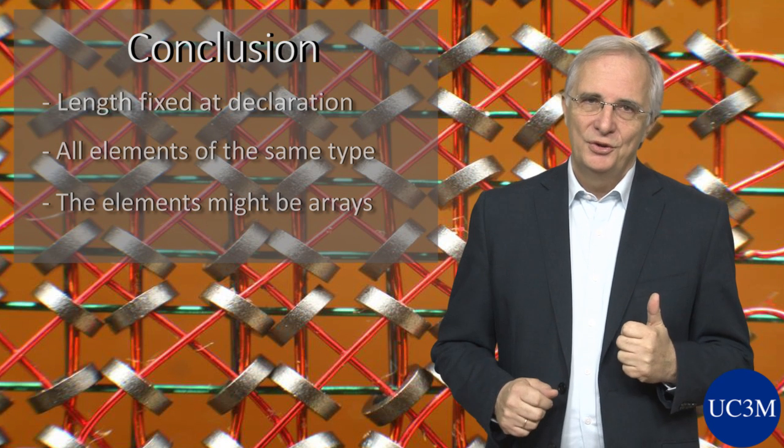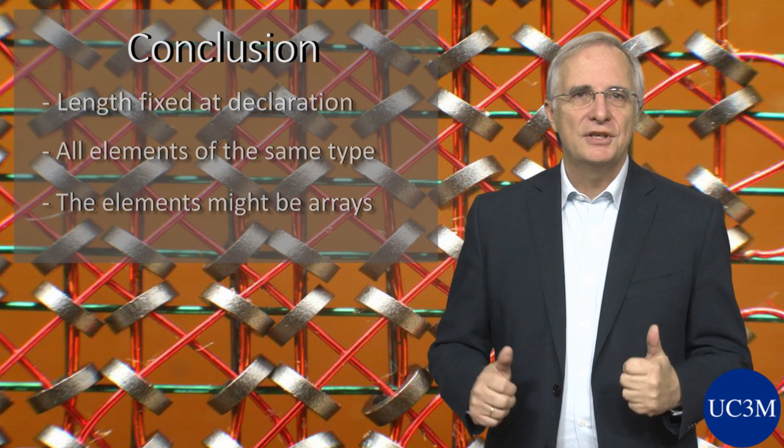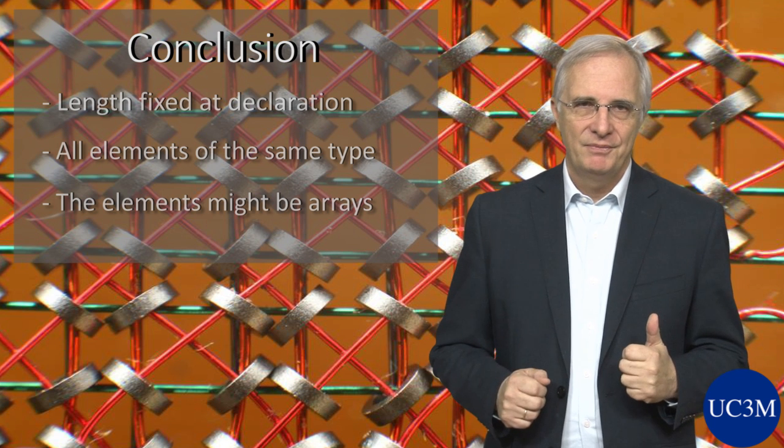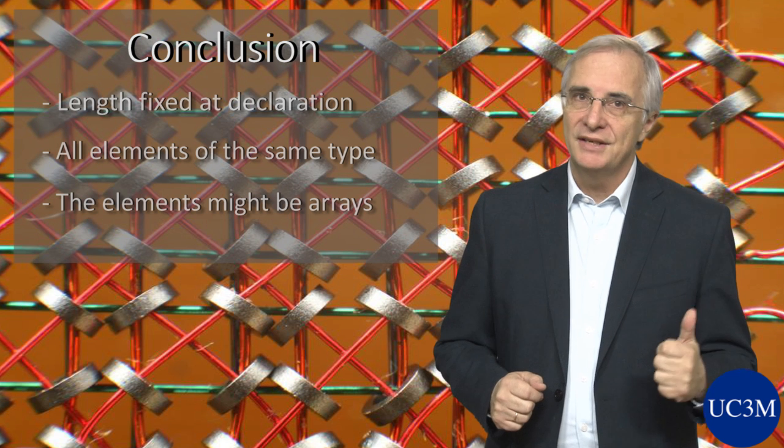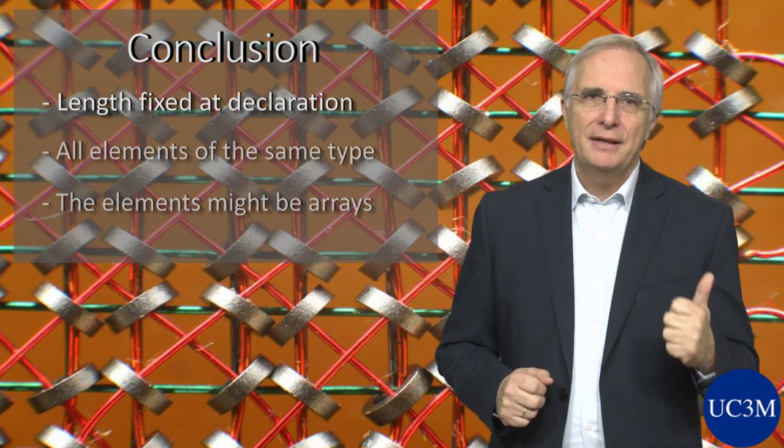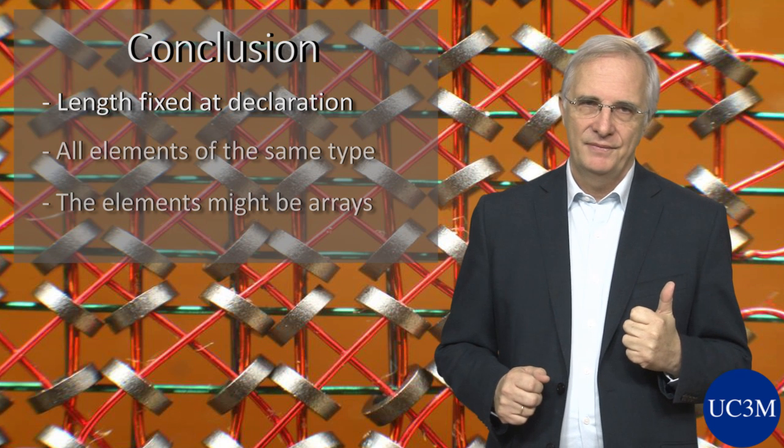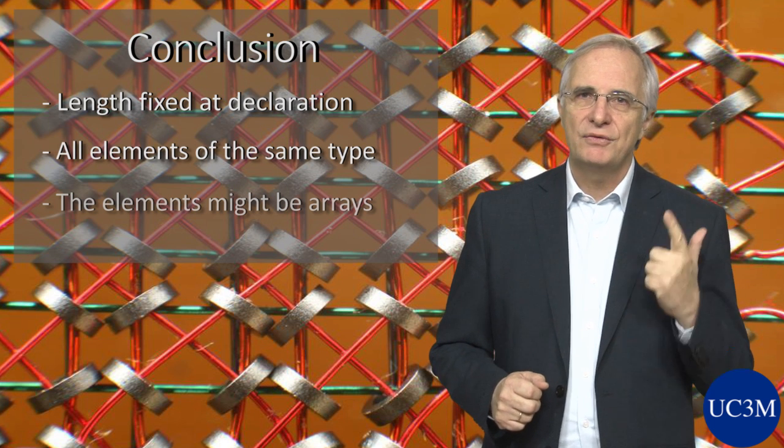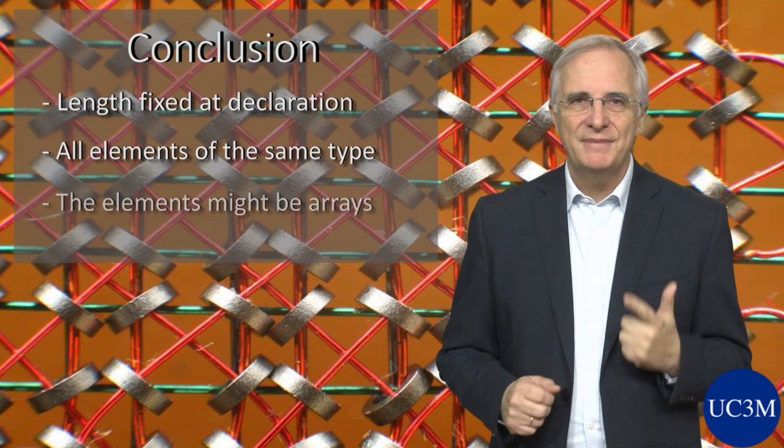To conclude, we can work with ordered sequences of elements of the same type. And we call them arrays. Things to remember. The length is fixed when we declare an array. Second, all the elements of an array have to be of the same type. And the type of the elements might be arrays as well.